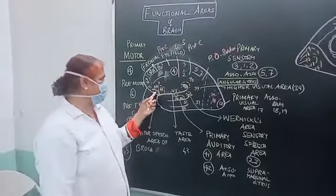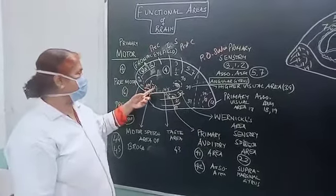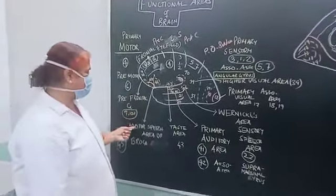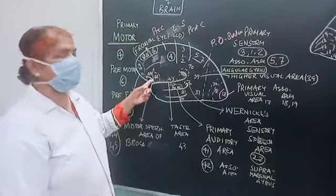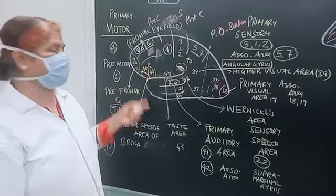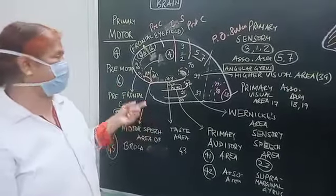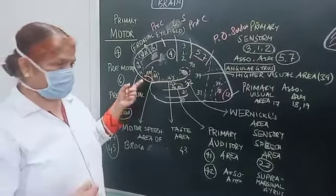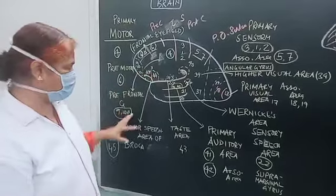Now coming to this area — there is the pars orbitalis and the pars triangularis. These two areas are called 44 and 45. This is called the motor speech area, Broca's area. So this is Broca's motor speech area. Because of areas 44 and 45, we can speak. The motor muscle activity which is activated for the formation of articulation is done by area number 44 and 45.